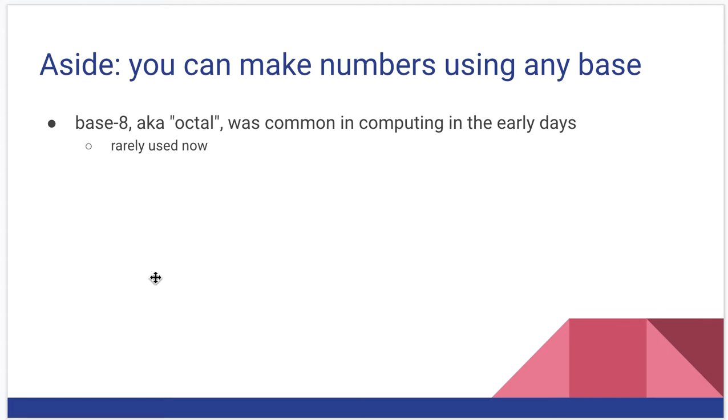Just as a side, we can make number systems using any base number. It was common in the early days of computing, and by early, this really predates me even, to talk about octal numbers. So, they were base 8, numbers made from the numbers 0 through 7. And you'll still see vestiges of that in documentation here and there, but to my knowledge, nobody uses that in any meaningful way anymore.